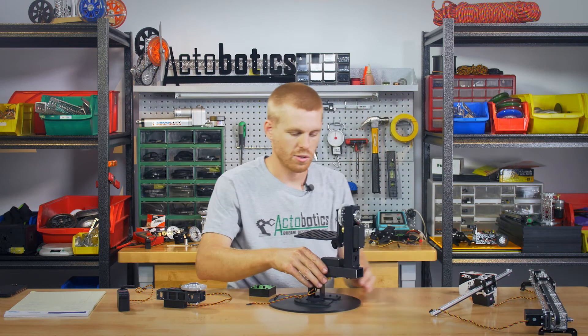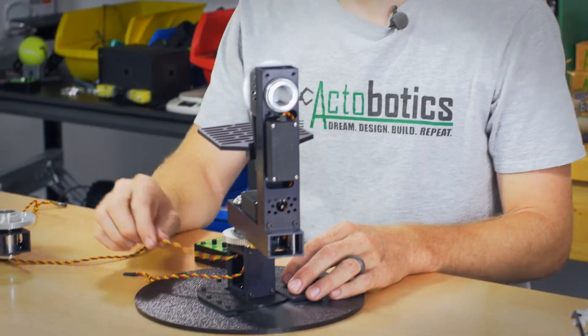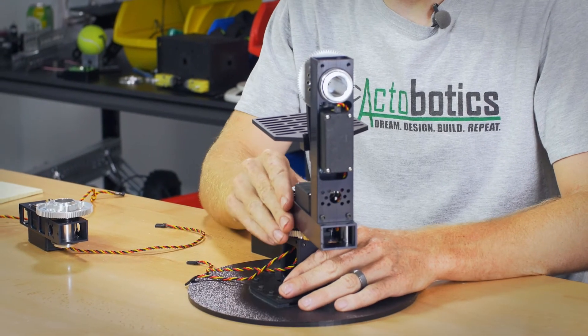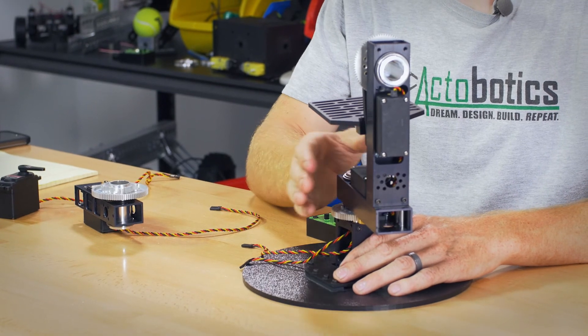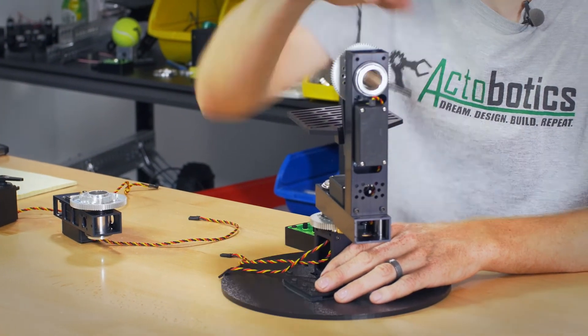Last thing I'm going to show you is going to be the PT 785 S pan and tilt. It's a servo driven pan and tilt with the HS 785 high tech servo installed in both the pan system and the tilt system.